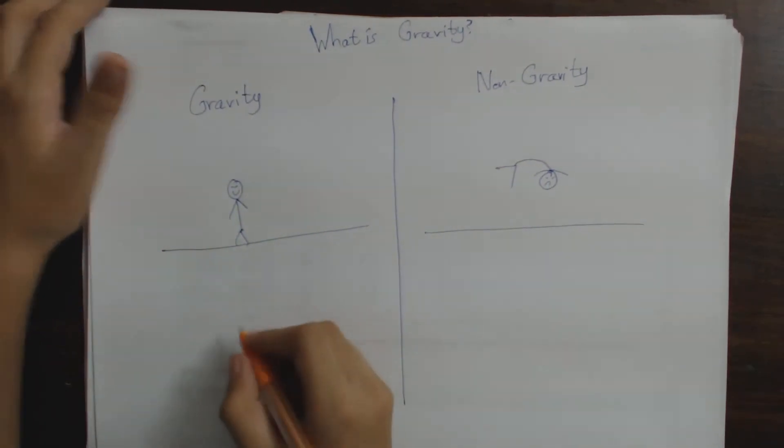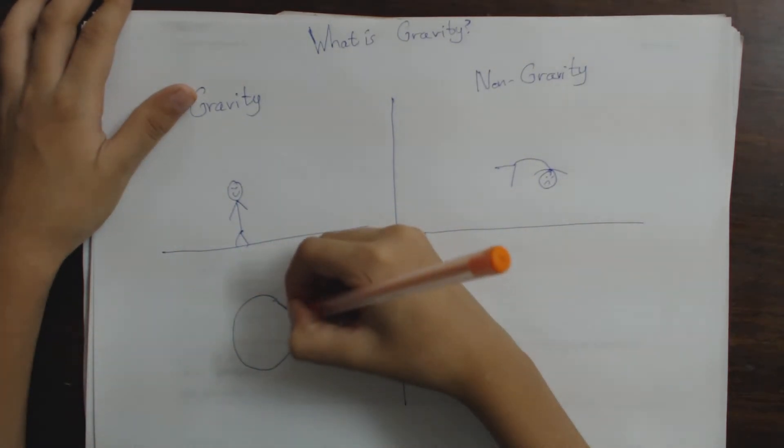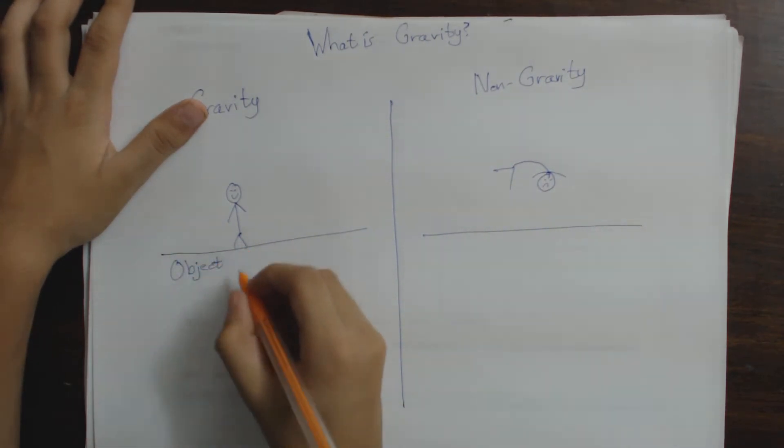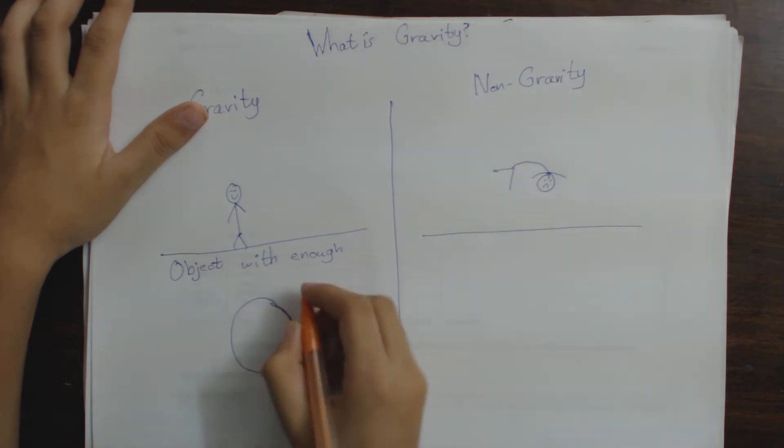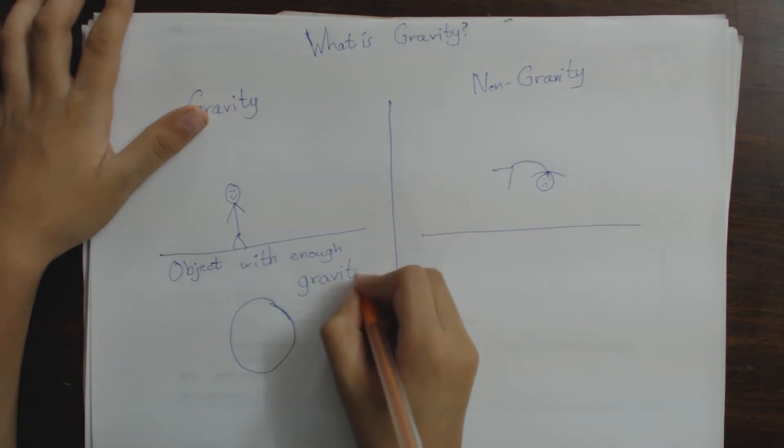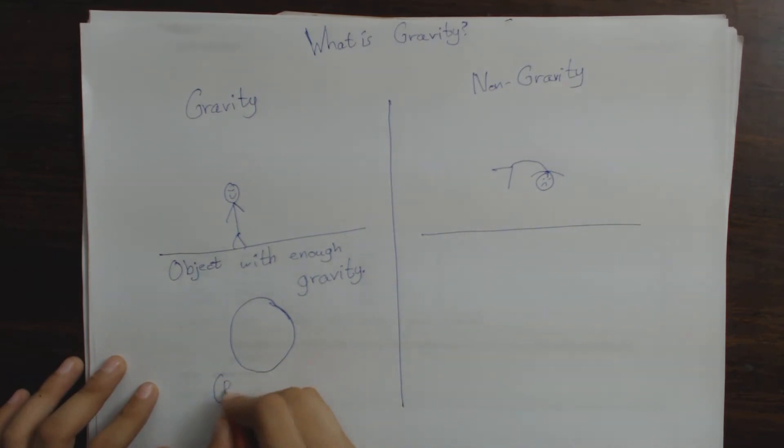Then comes into planets' shapes. Here is an object with enough gravity. It's so circular and will be known as a planet.